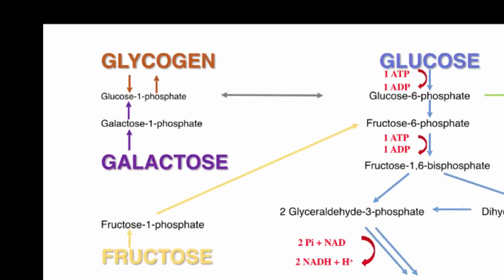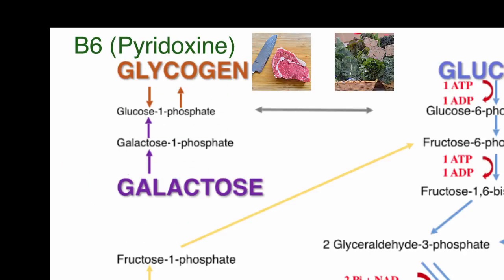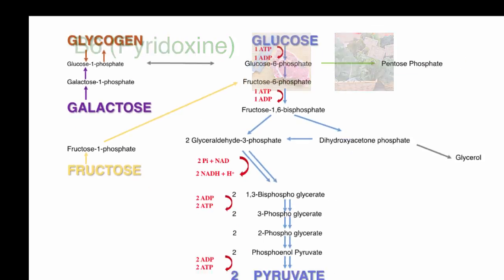there is really only one important vitamin that we will discuss, and that is B6 or pyridoxine. This vitamin is used during the breakdown of glycogen into glucose 1-phosphate. Therefore, B6 is essential to the start of glycolysis when glycogen is being used more than glucose.